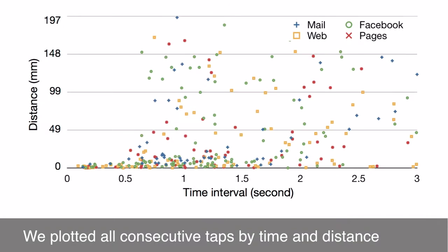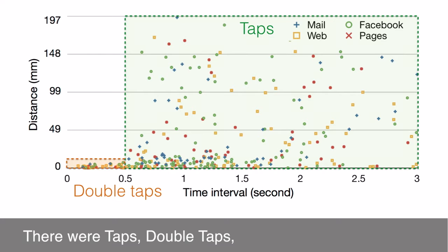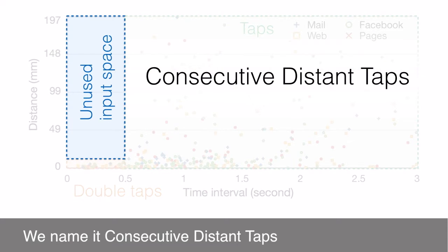We plotted all consecutive taps by time and distance from the previous taps. There were taps, double taps, and empty space. We named it consecutive distance taps.